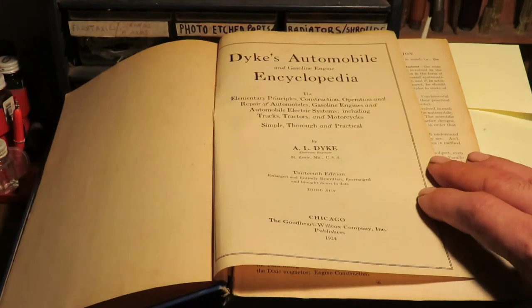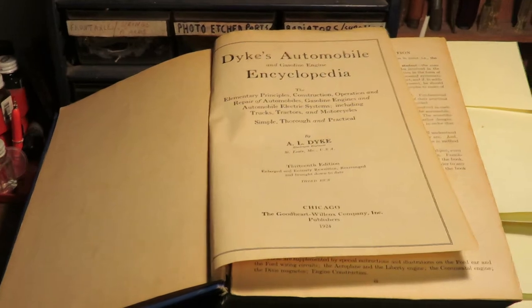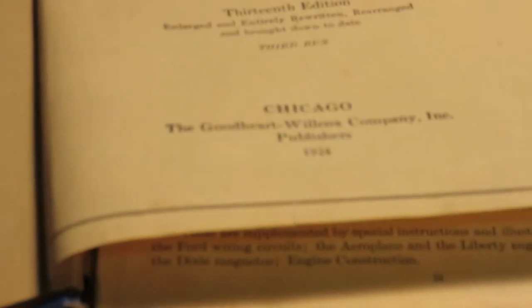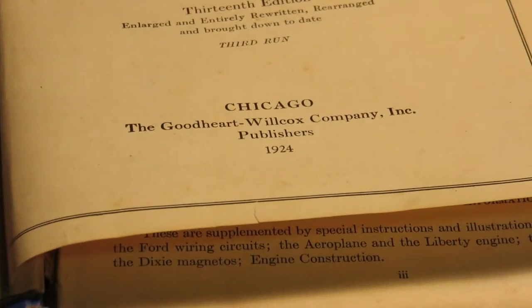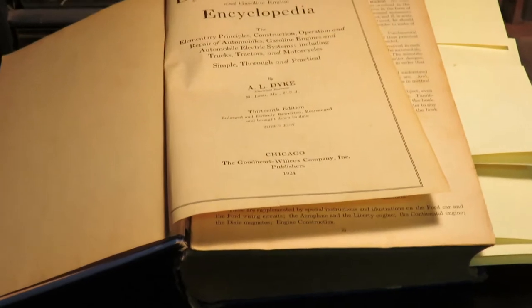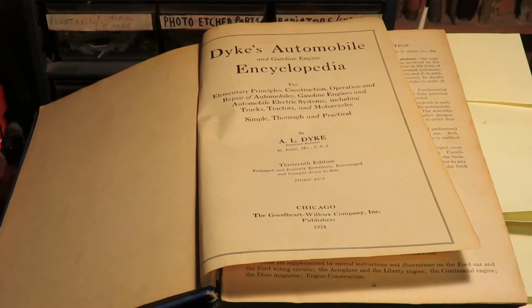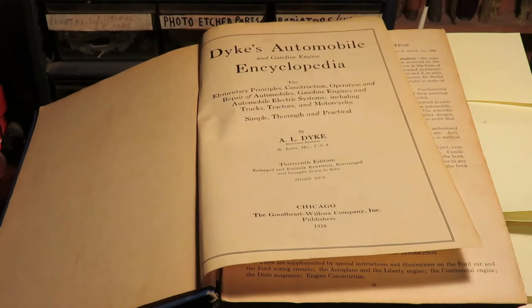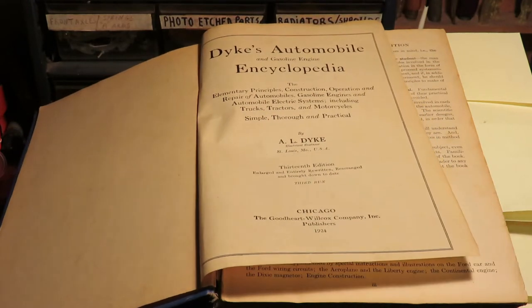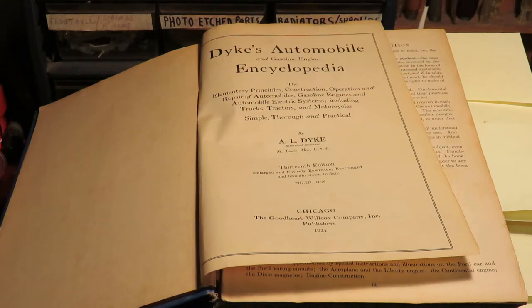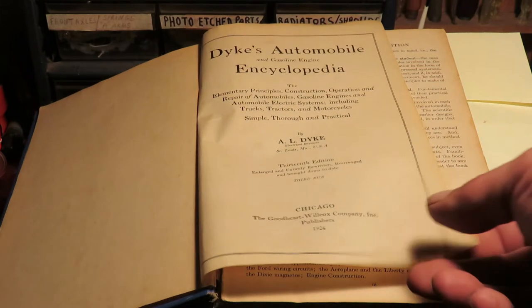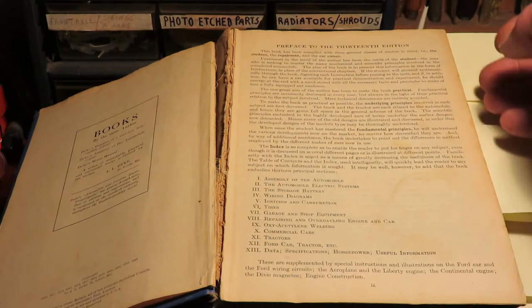It's falling apart. My grandpa did inscribe it. You can see there, 1924. It's Dyke's Automobile and Gasoline Engine Encyclopedia, and it covers quite a few things: construction, operation, repair of automobiles, engines, electrical systems, including trucks, tractors, motorcycles, and there's even a little section on some aircraft engines.